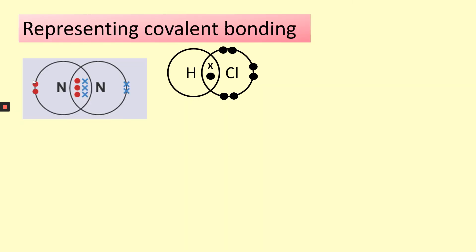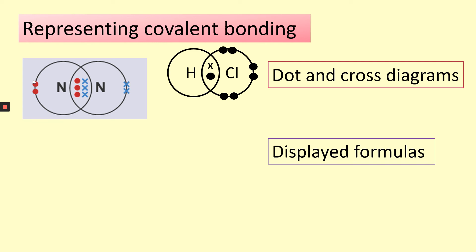So you've drawn some examples of dot-cross diagrams, but they are not the only way we can represent covalent bonding. On your screen you can see the nitrogen and hydrogen chloride dot-cross diagrams. Another way of showing covalent bonding is called displayed formulas — this is where we just use the element symbols and lines. Each individual line represents a covalent bond. Nitrogen has three lines between the two nitrogen atoms because it has a triple bond. Hydrogen chloride only has one shared pair of electrons, so there is just a single line between the two element symbols.